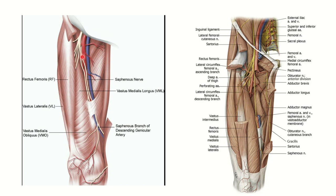The femoral nerve descends and finally terminates by giving the saphenous branch and other branches. In the second picture we can also see the psoas major and iliacus muscles, which are the chief flexors of the hip joint and are supplied by the femoral nerve. After crossing the inguinal ligament, it supplies the anterior thigh muscle group.